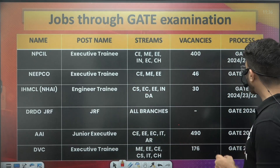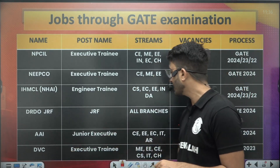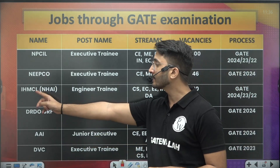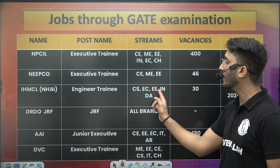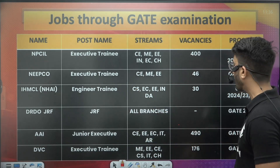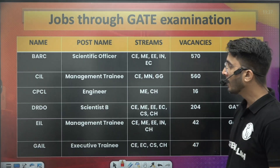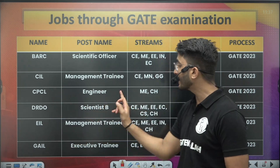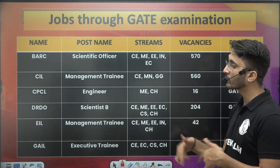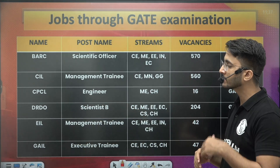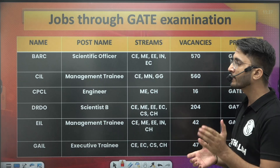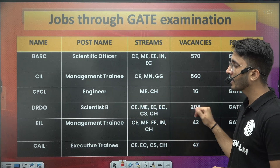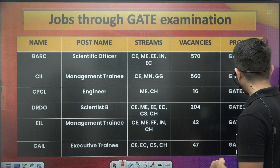Similarly, for GATE 2023, you can observe the trend — DVC has multiple branch vacancies. One important point: in IHMCL under NHI, DA branch vacancies are listed — this is the first PSU where a DA score is eligible, so this opportunity is also available for DA students. Similarly, BRC, CIL, CPCL, DRDO, EIL, and GAIL — DRDO scientist recruitment was also released through GATE 2023 and 2024. They released short notifications; detailed notifications are still to come. The position is Scientific, with multiple branch vacancies, and they are currently shortlisting students.